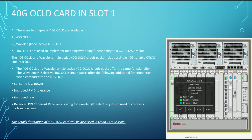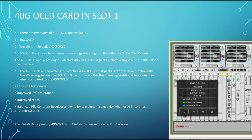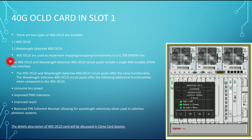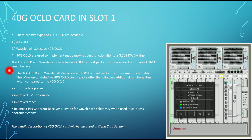There are two types of 40G OCLD card: 40G OCLD and wavelength selective 40G OCLD. The 40G OCLD is used to implement mapping and wrapping functionality to a G.0709 DWDM line. Both types include a single 40G tunable OTM3 line interface, which connects to the MUX/DEMUX unit. Benefits include less power consumption, improved PMD tolerance, improved reach, balanced PIN coherent receiver, and colorless photonic system support when using the wavelength selective variant.